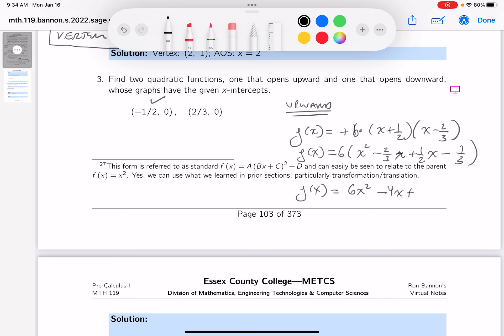minus 4x plus 3x minus 2. I'm going to clean it up a little bit. That's 6x squared minus x minus 2. There's one answer.